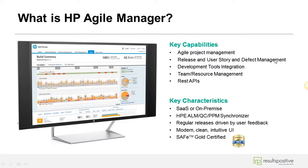Since Agile Manager is a modern, clean, and intuitive UI built by a scrum team at HPE, the product is driven by user feedback. The feedback loop enables you to make enhancement requests and suggestions on how to improve the product. Over time you can see the product evolving at a rapid pace, getting better with every release, adding new features to make your job easier.